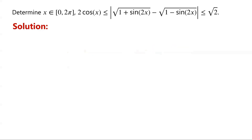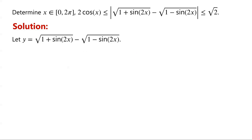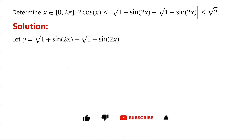The middle expression is the modulus of the difference of two square roots. Firstly, we simplify the middle expression. We let y equal the square root of (1 + sin 2x) minus the square root of (1 - sin 2x).